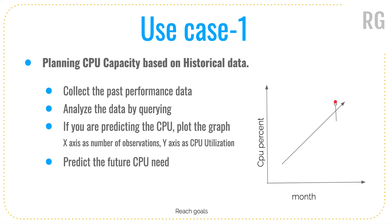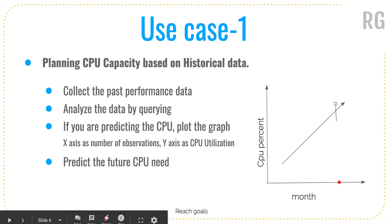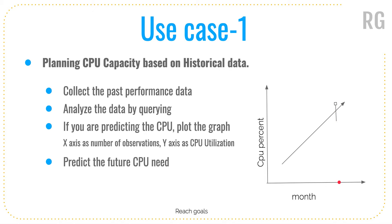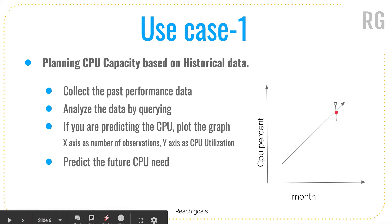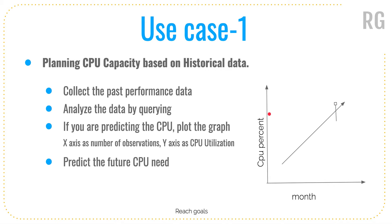Once we have that graph charted out, if we want to figure out what the CPU capacity will be at a specific month next year, we can easily read the CPU percentage off the y-axis. That is one way we can predict what CPU capacity will be needed in the future.